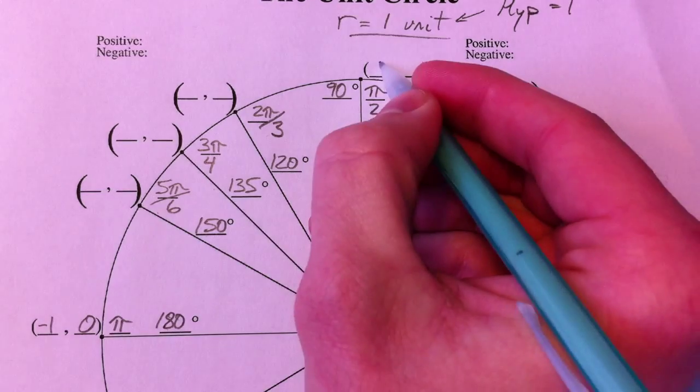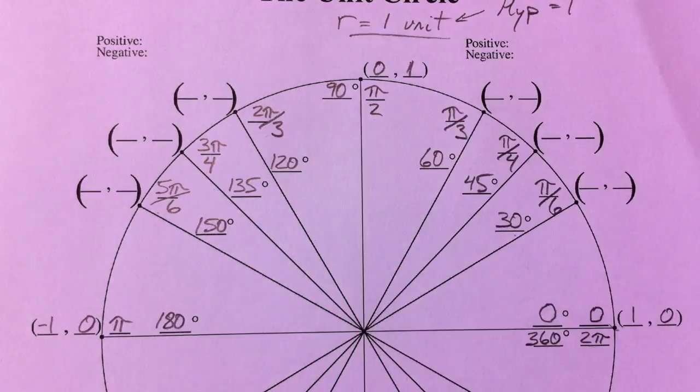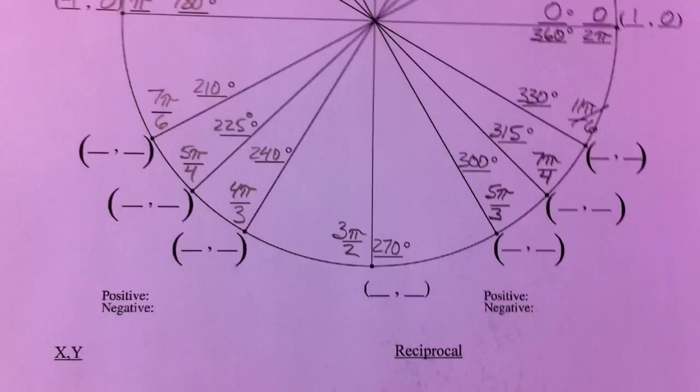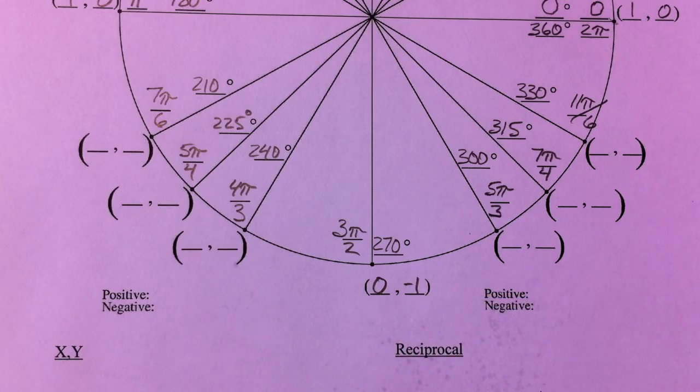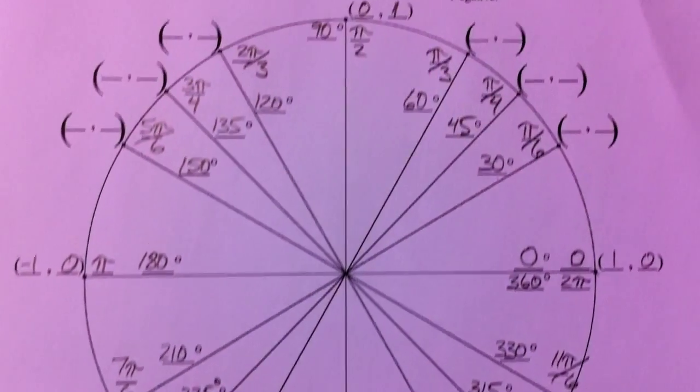If we go straight up, we've gone none to the left, but 1 up. And if we go down, we go none left and right, but 1 down, all because the radius is 1.